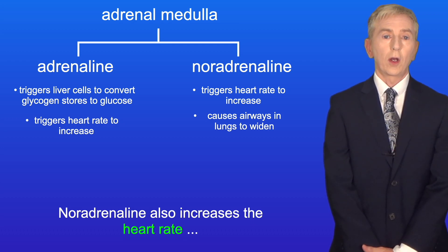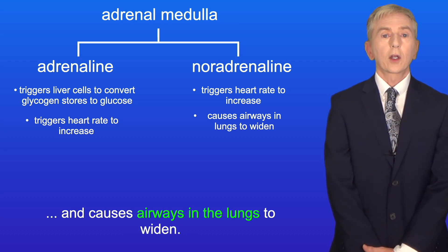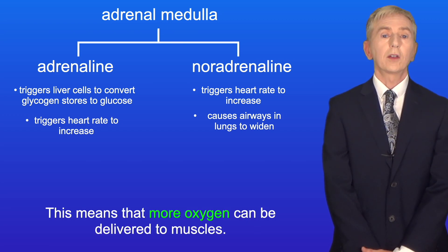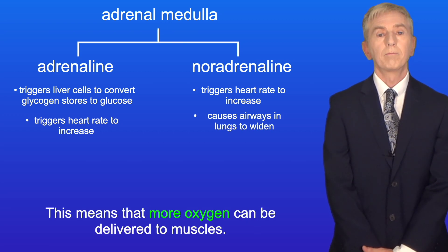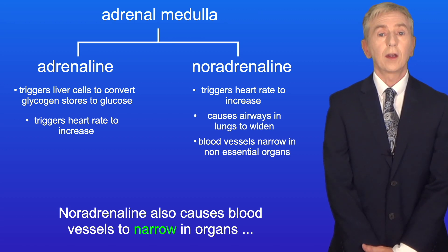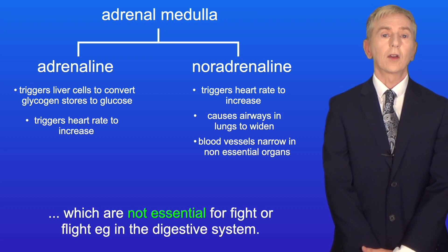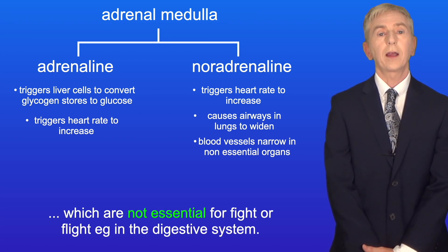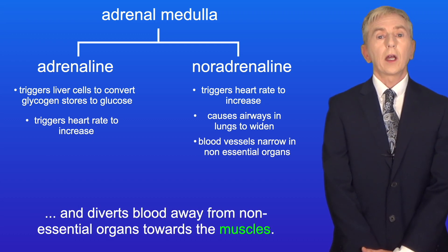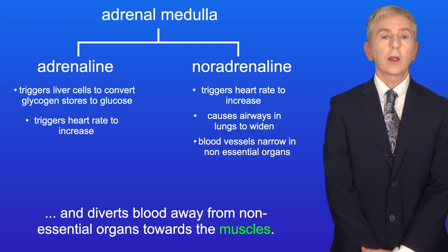Noradrenaline also increases the heart rate and causes airways in the lungs to widen, meaning that more oxygen can be delivered to muscles. Noradrenaline also causes blood vessels to narrow in organs which are not essential for fight or flight, for example in the digestive system. This increases blood pressure and diverts blood away from non-essential organs towards the muscles.